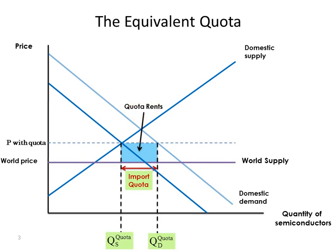The cost of producing this good by the world's suppliers is less than the price the good sells for in the domestic economy. So the difference between the price and the cost times the quantity gives us what we call quota rents.